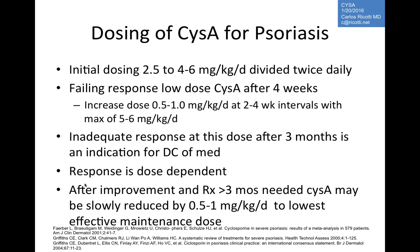The initial dosing is two to six mg/kg/day, divided twice daily. A common dose is 200mg twice daily for a 70kg patient. If there is a failing response at a low dose after about a month, you may increase by 0.5 to 1.0 mg/kg/day at two-to-four week intervals. The maximum dosage shouldn't exceed six mg/kg/day due to nephrotoxicity. If there is an inadequate response at high dose after three months, discontinue the drug. Response is dose-dependent, though hypertension is not dose-dependent — nephrotoxicity is.